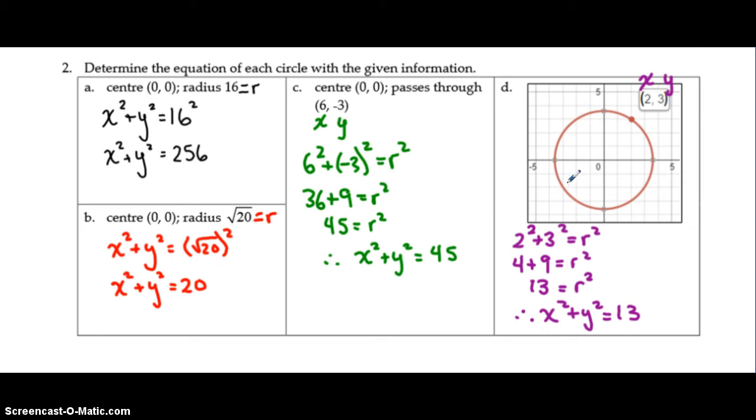Questions C and D were the ones like example 1 above, where you were given a point, not the radius. So, you substituted in for the x and y, so that you can solve for r squared. Again, they give you the point x and y, so that you can solve for r squared.